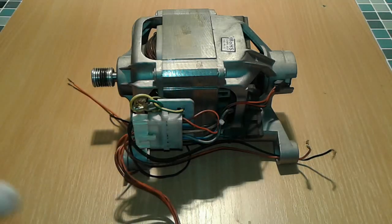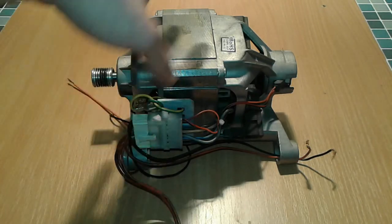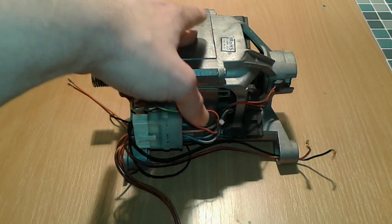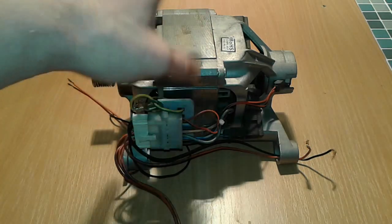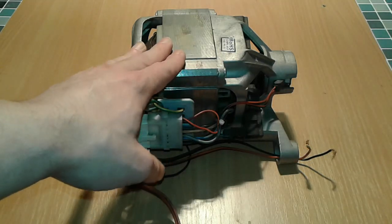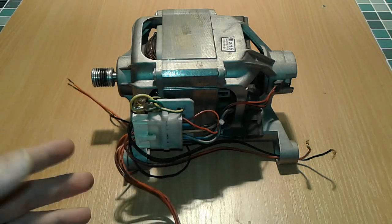This is a washing machine motor from an Indesit washing machine. This is a universal motor. It's called universal because it can run both on AC and DC.